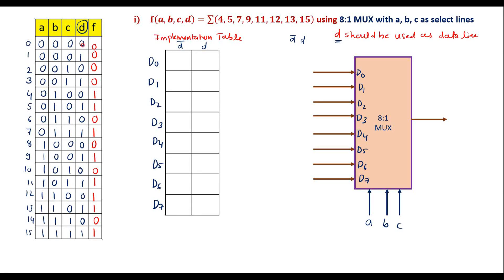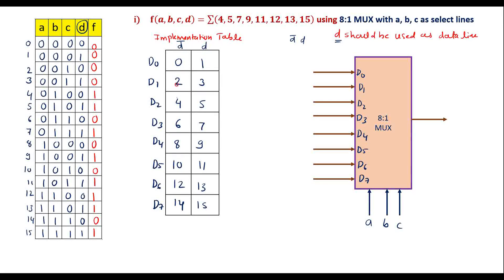Wherever the value is 0, we consider the D̄ column; if value is 1, we consider the D column. For D̄, the even minterms are 0, 2, 4, 6, 8, 10, 12, and 14. For D, the odd minterms are 1, 3, 5, 7, 9, 11, 13, and 15. We can also write them continuously as 0, 1, 2, 3 up to 15. This is the implementation table.